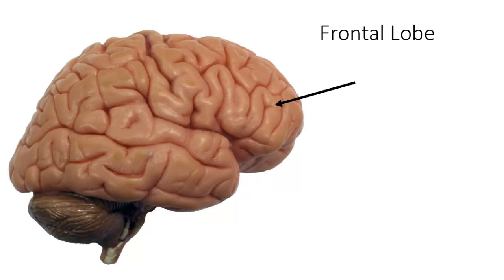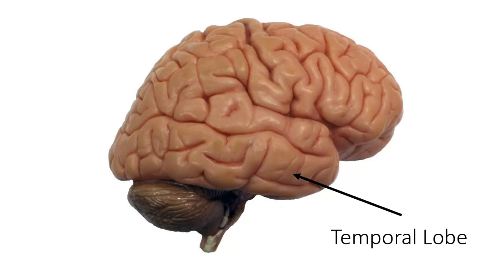Obviously, this is indicating the frontal lobe — it sits right underneath your frontal bone. It's the most anterior portion of your brain. The bone that sat on the side of your head, right underneath your ear, that was the temporal bone, so that lobe is the temporal lobe.